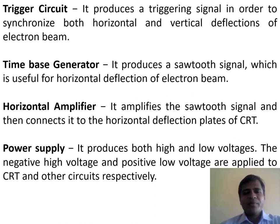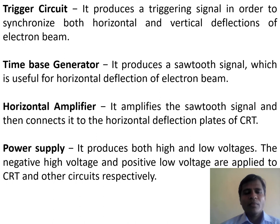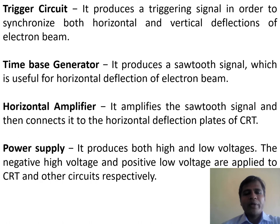The horizontal amplifier performs almost the same basic function as the vertical amplifier, but it amplifies the sawtooth signal and then connects it to the horizontal deflection plates of the cathode ray tube. The power supply produces both high and low voltages. The negative high voltage and the positive low voltage are applied to the cathode ray tube and the other circuits respectively.